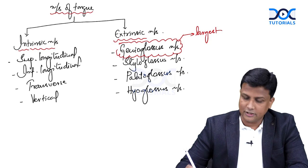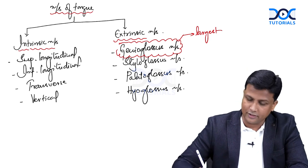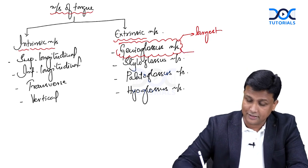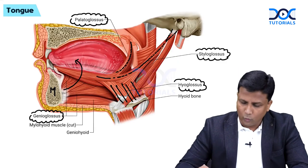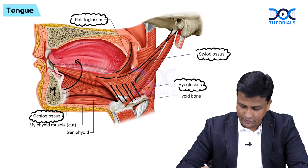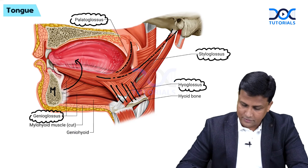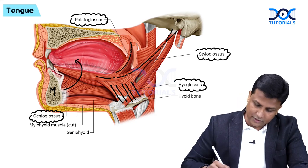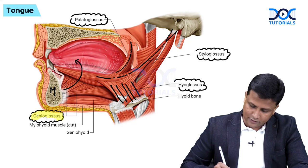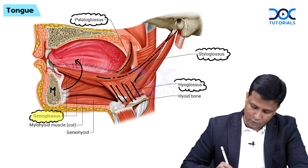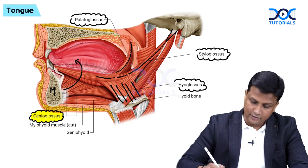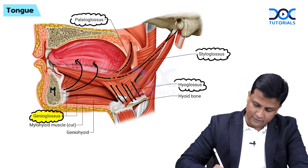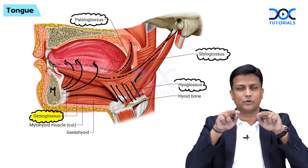Another very important question that has been asked many times in exams: which is the safety muscle of the tongue? The answer is genioglossus — it is the safety muscle of the tongue. The reason is that the genioglossus muscle helps in protrusion of the tongue, as you can see from the way its fibres enter the tongue.